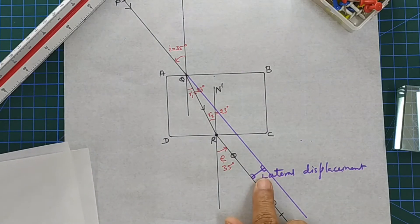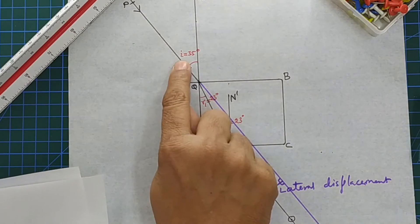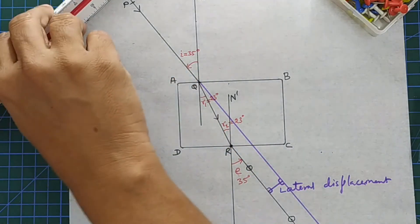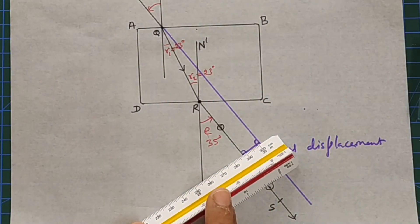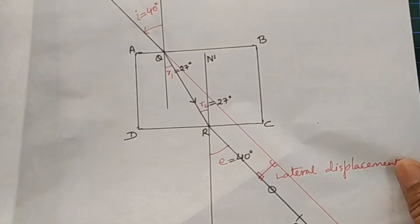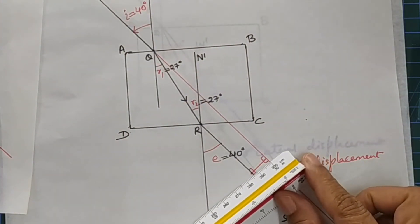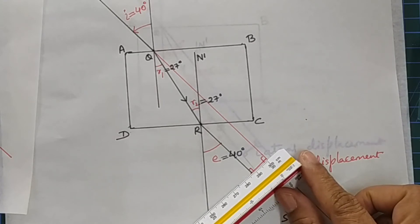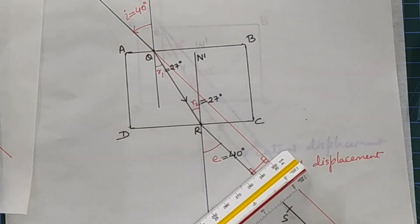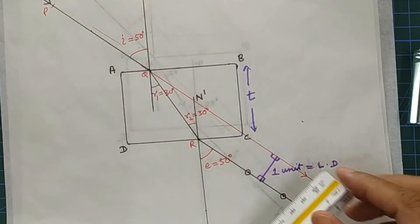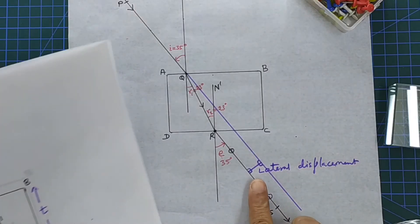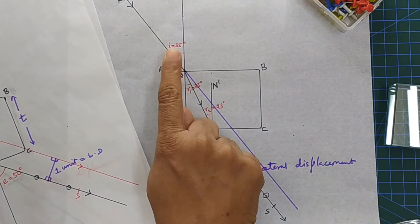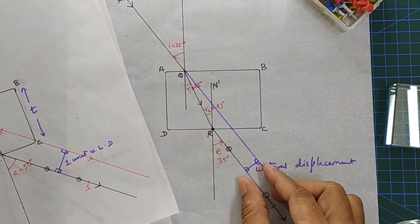Lateral displacement depends on certain factors. The first factor is the angle of incidence itself. For 35° the lateral displacement measured about 1.3 units, for 40° it was slightly more, and for 50° it was about 2 units. So as the angle of incidence increases, lateral displacement also increases — lateral displacement is directly proportional to the angle of incidence.